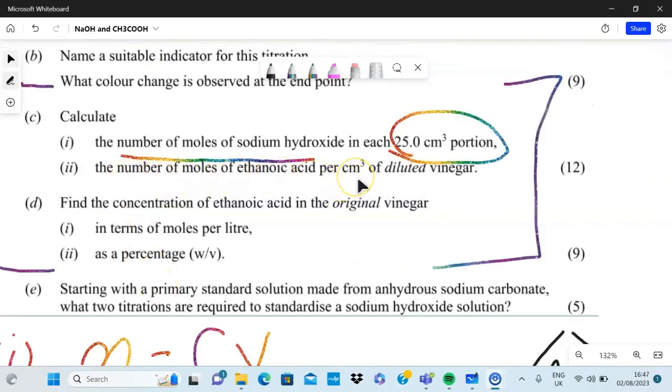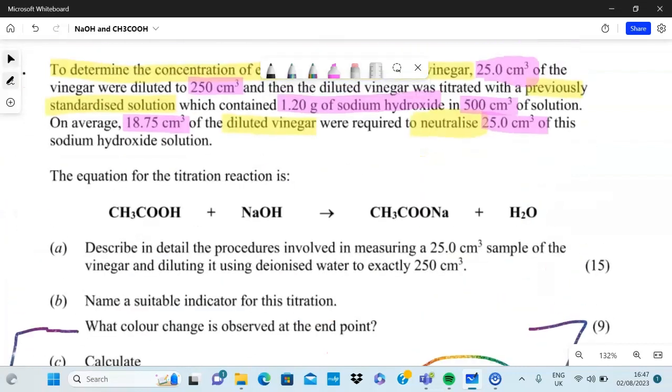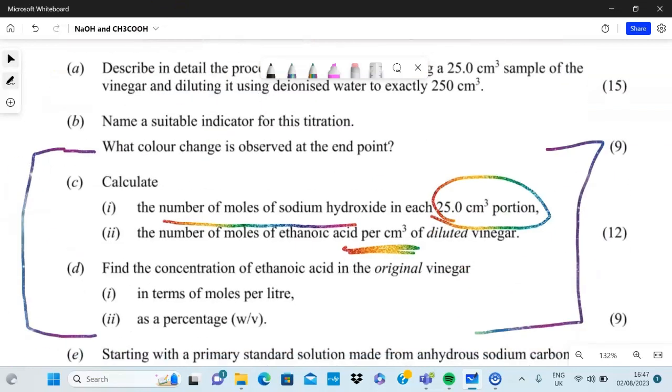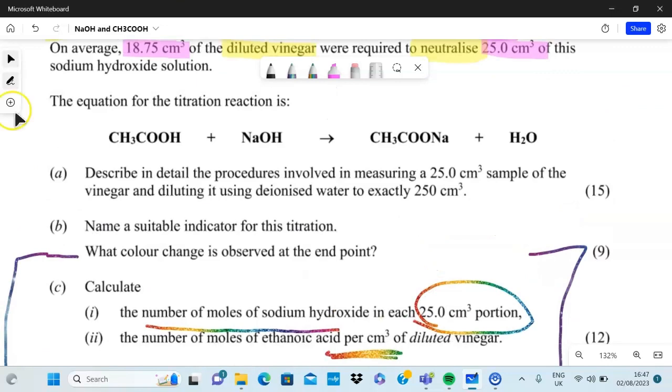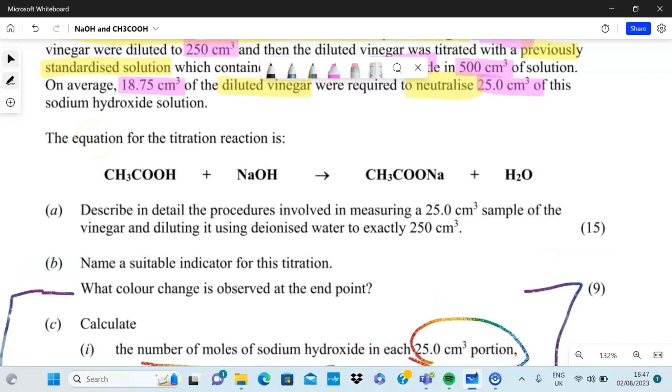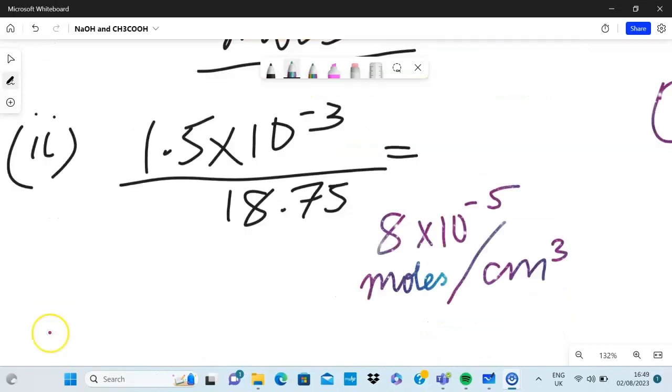Next question: number of moles of ethanoic acid per cubic centimeter. Tricky - per cubic centimeter, one cubic centimeter of diluted vinegar. Going back, I would know 18.75 of diluted vinegar was used. When I look at the reaction equation it's just 1 is to 1, so that's no problem. Since it's 1 to 1, we know it's the same amount of moles as the NaOH. Let's do that calculation - I divide that and get 8 times 10 to the power of minus 5 moles per cubic centimeter.